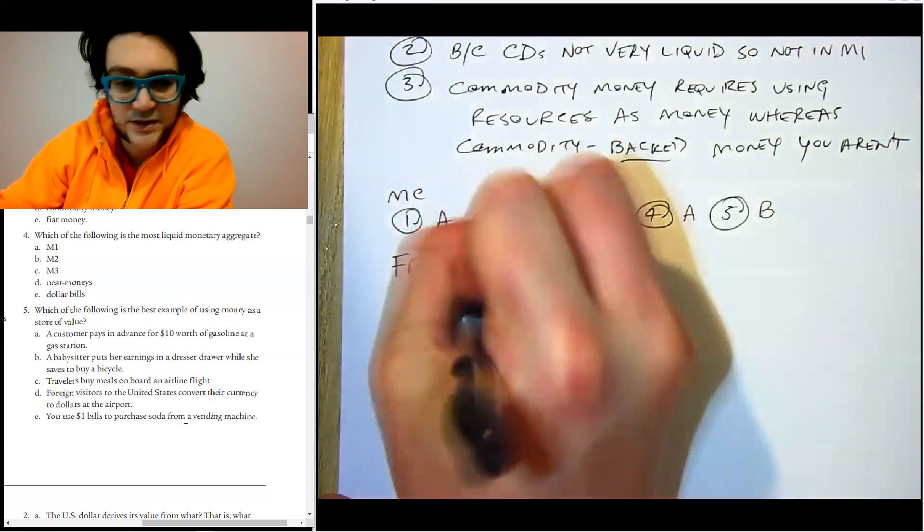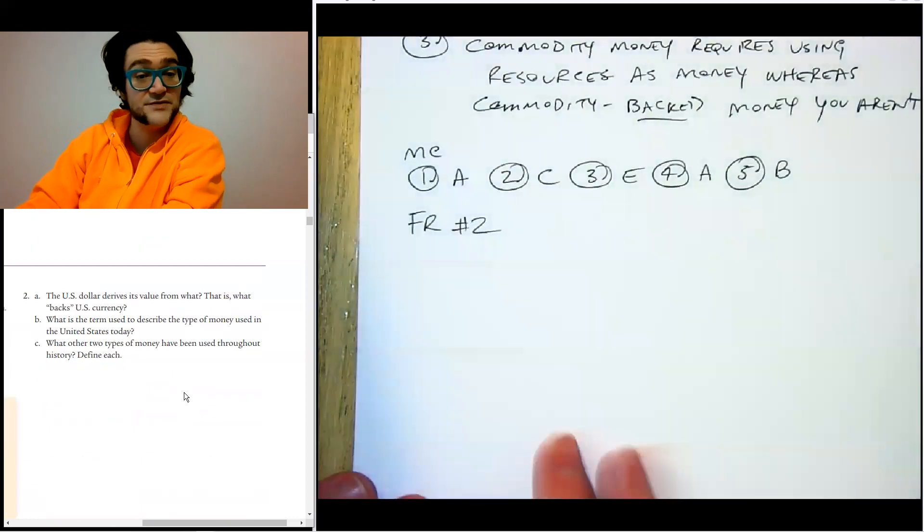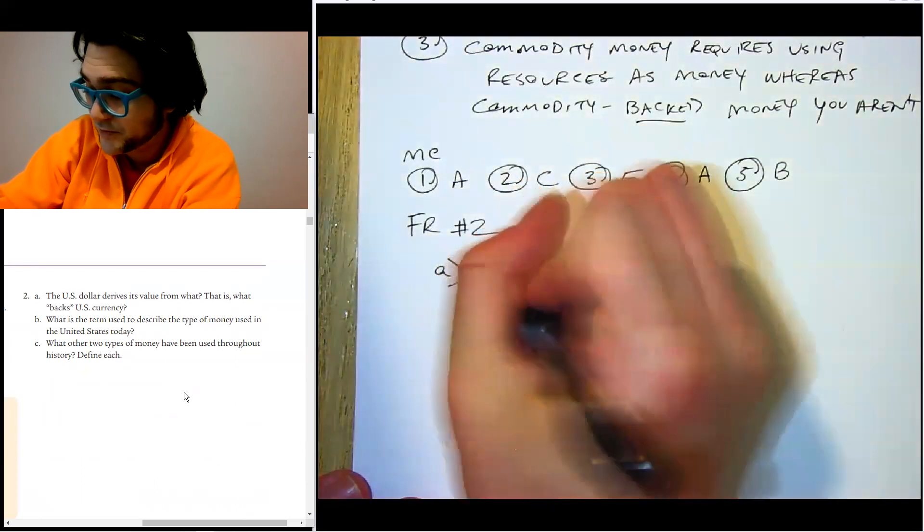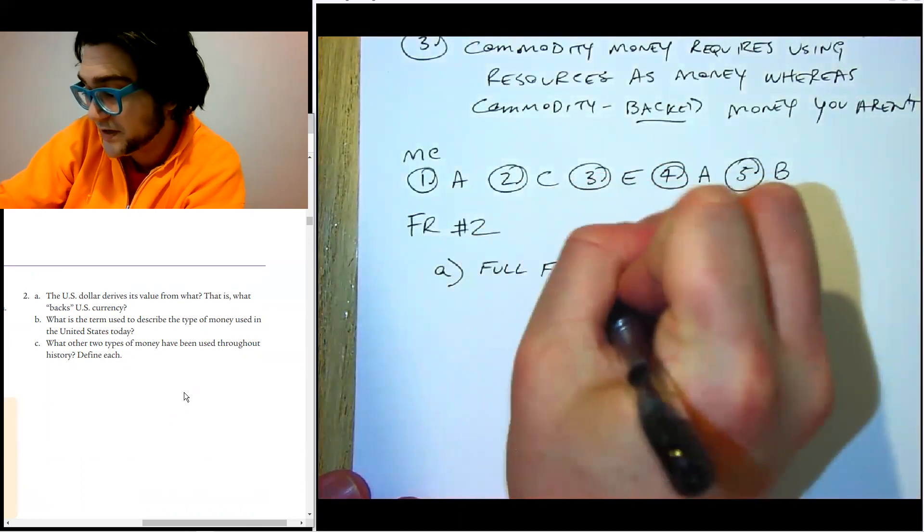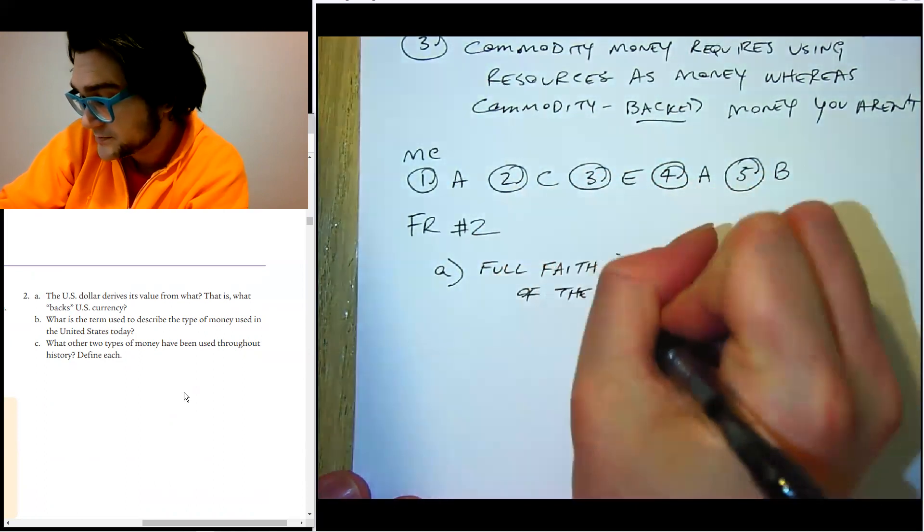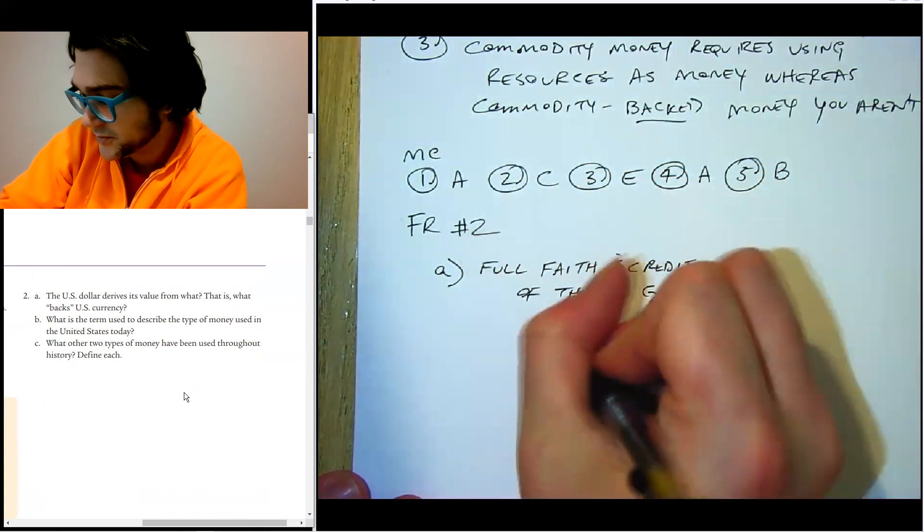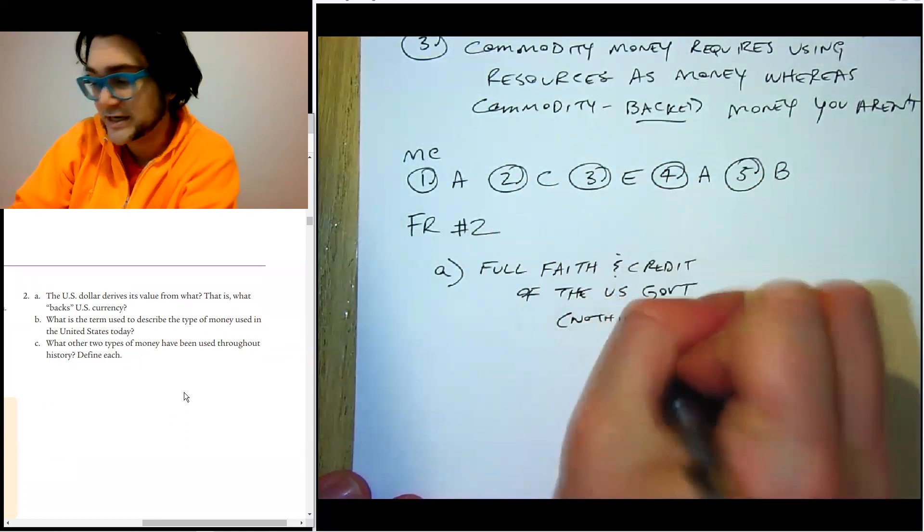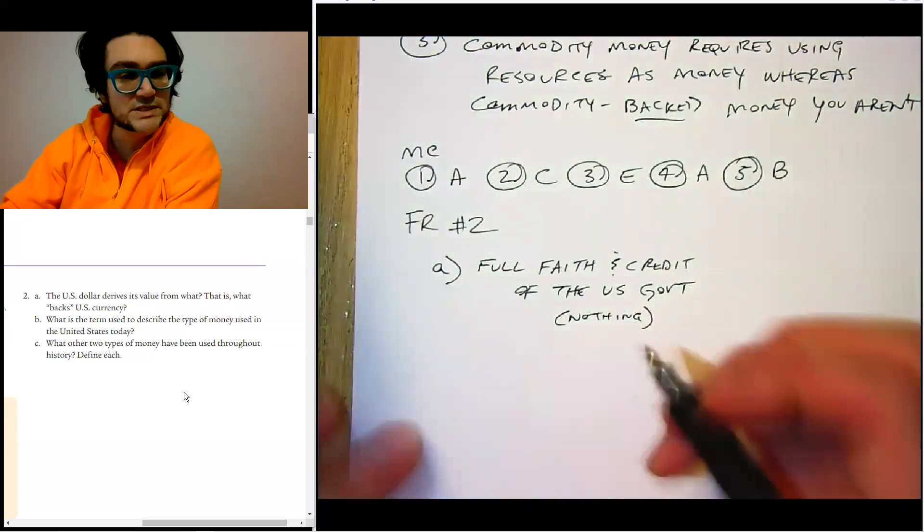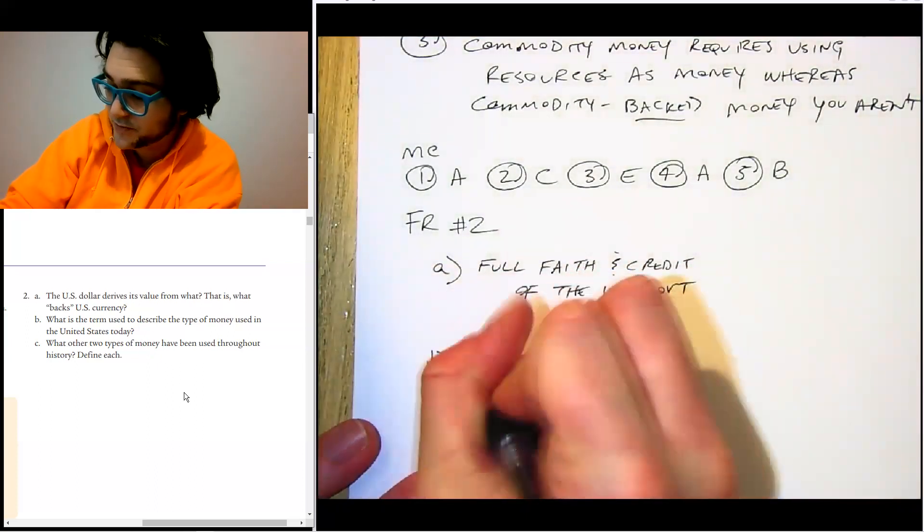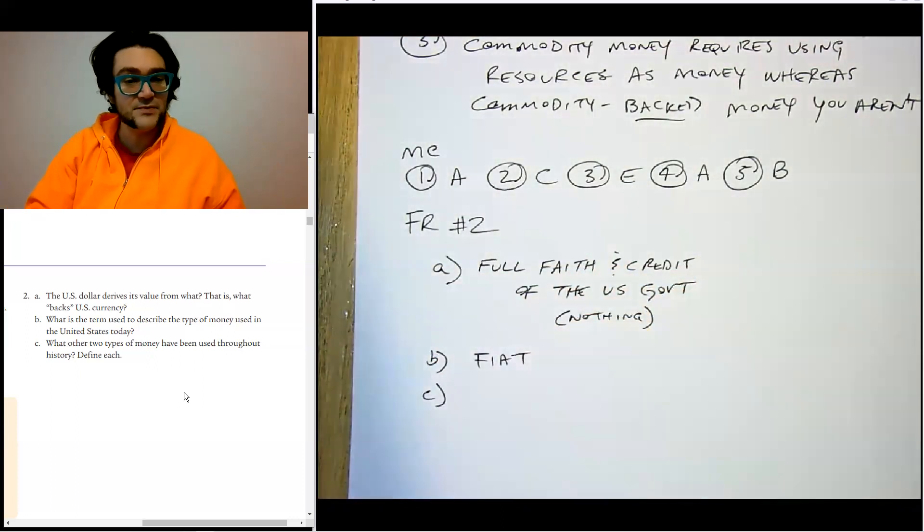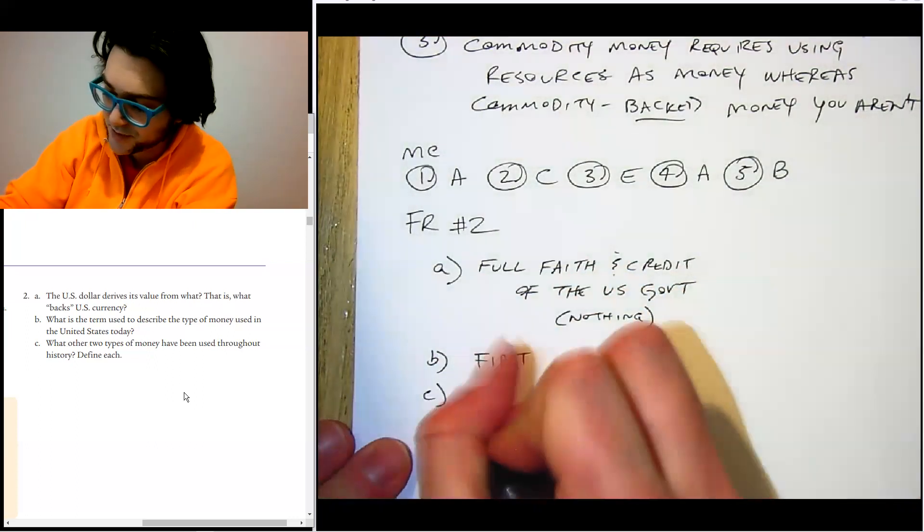Let's take a look at free response number two and then get on our way. The U.S. dollar derives its value from what? That is, what backs the U.S. currency? So first is the full faith and credit of the United States government. So nothing. Nothing technically backs it up, right? It's just the government saying this is how much it is. This is what this is worth. B. What's the term used to describe this type of money? Well, by this point, hopefully, you know, it's fiat. Just like the car, fiat. Make it so.